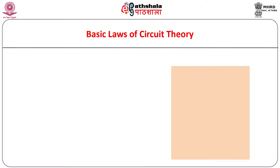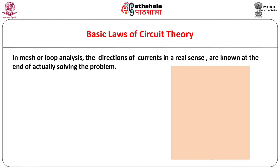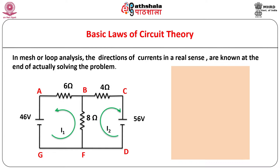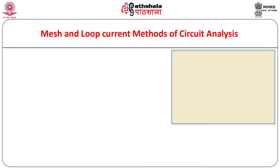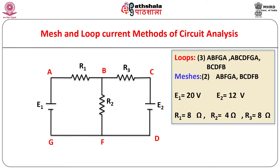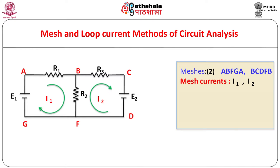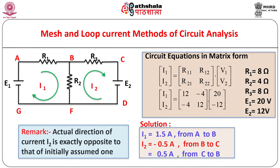In circuit theory, while applying the mesh or loop analysis, the initially assumed direction of current may be arbitrary. The true directions of currents are known at the end of actually solving the problem. As an example, let us see how the mesh current or loop current method can be used to determine the current distribution in a DC resistive circuit of two meshes and three loops. Let I1, I2 be the mesh currents through meshes A, B, F, G, A and B, C, D, F, B respectively, determined by standard method. Note that the actual direction of current I2 is exactly opposite to that initially assumed.